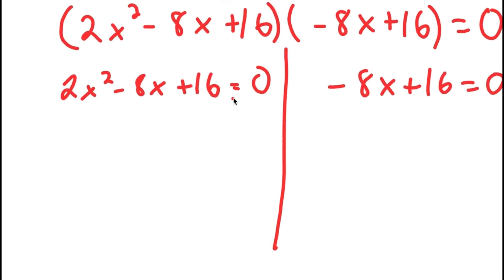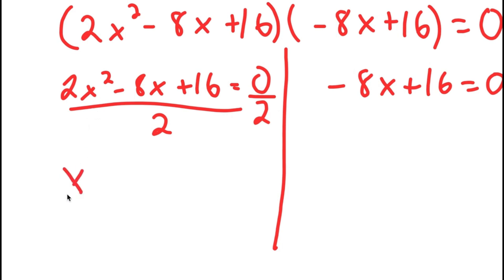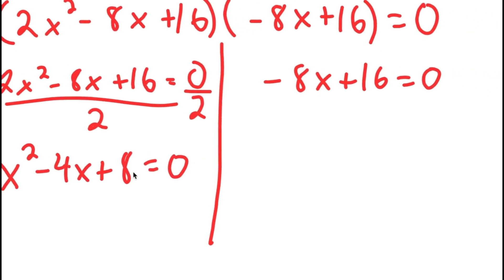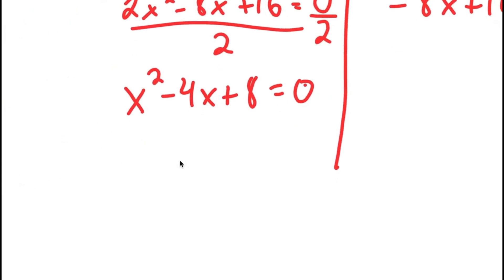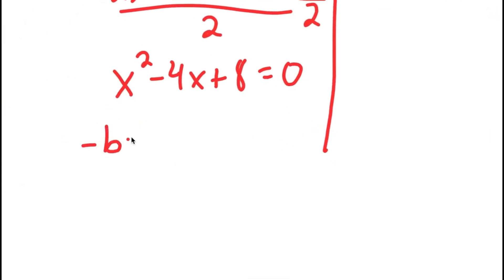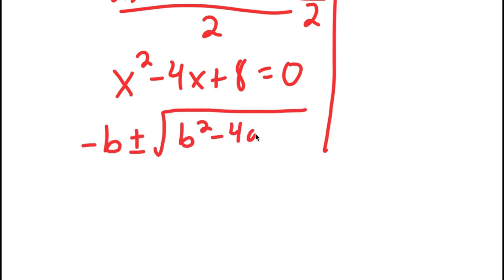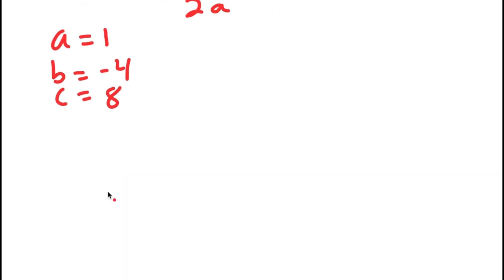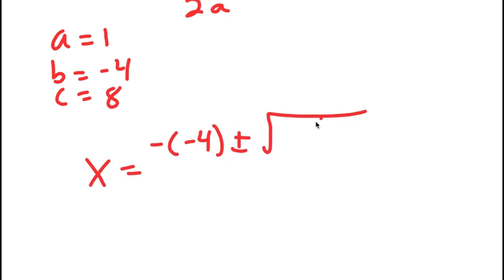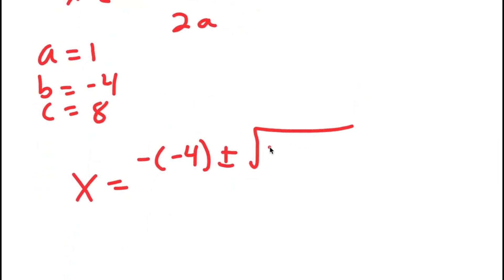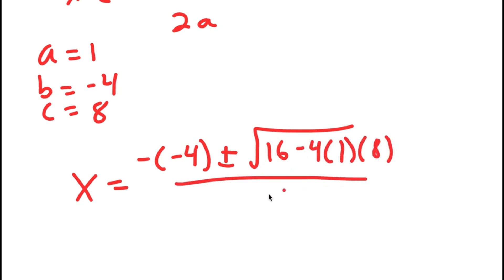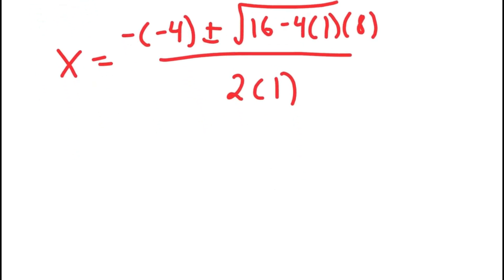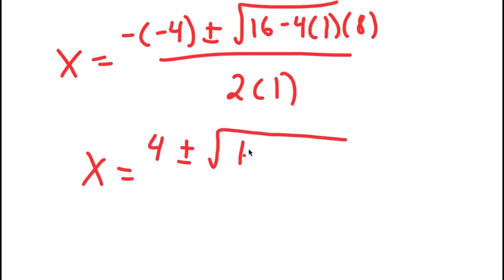This splits into two equations: 2x squared minus 8x plus 16 equals 0, and negative 8x plus 16 equals 0. Dividing the first by 2 gives x squared minus 4x plus 8 equals 0. Using the quadratic formula, x equals negative b plus or minus the square root of b squared minus 4ac, all over 2a, where a equals 1, b equals negative 4, and c equals 8. So x equals 4 plus or minus the square root of 16 minus 32, all over 2.